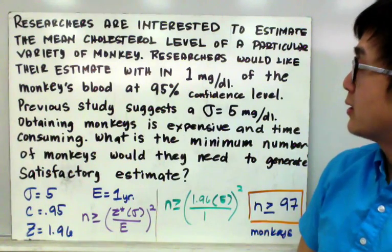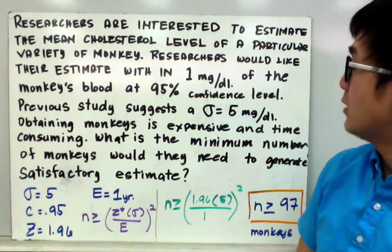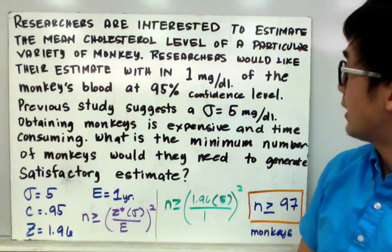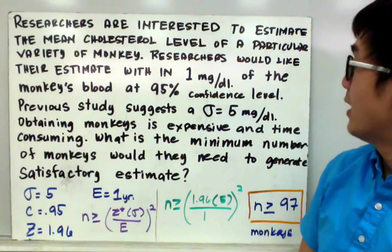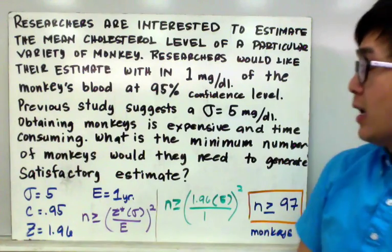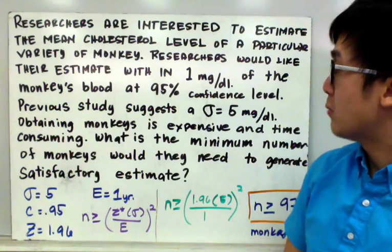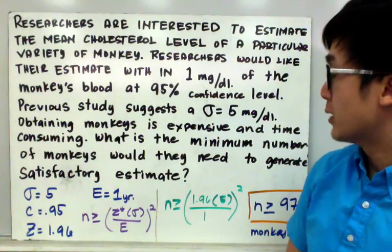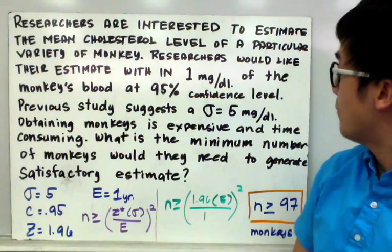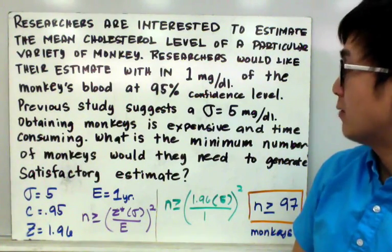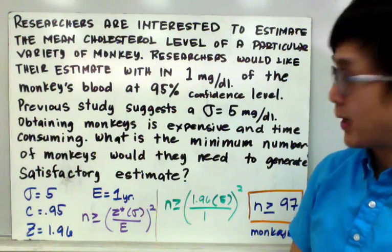Previous studies suggest that the population standard deviation is equal to 5 mg/dL. We know that obtaining monkeys is expensive and time consuming. What is the minimum number of monkeys would they need to generate a satisfactory estimate?